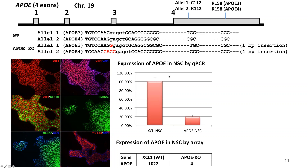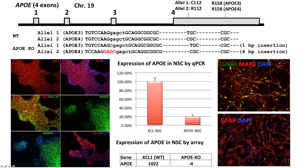Here are some of the extra efforts we did. We looked at expression at the mRNA level in the knockout line, generated neural stem cells, and confirmed downregulation of the ApoE allele. We also validated this by whole-genome analysis and microarray. We were able to make cortical neurons and astrocytes from this line, which are the two most relevant cell types for studying Alzheimer's disease.